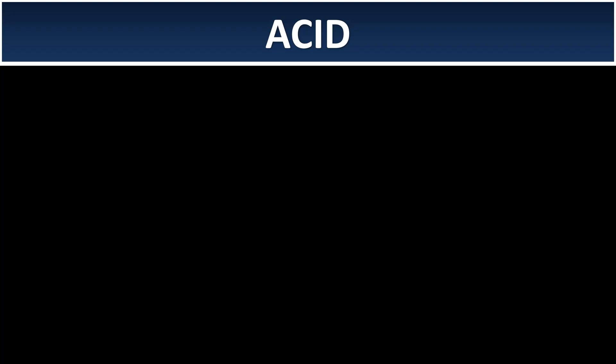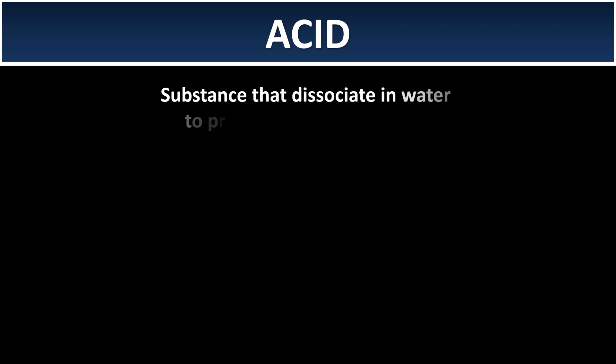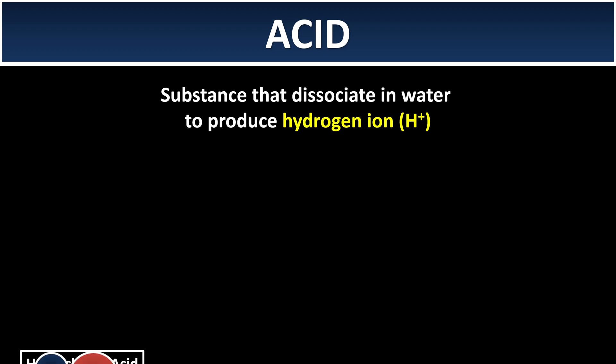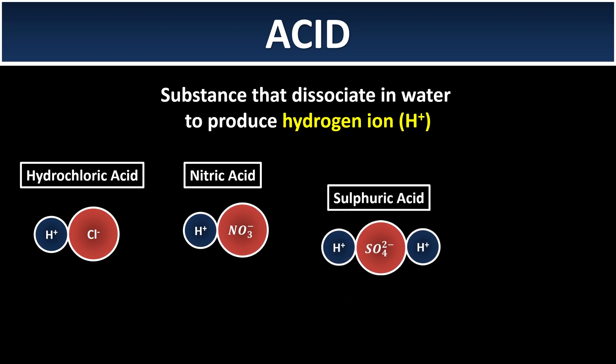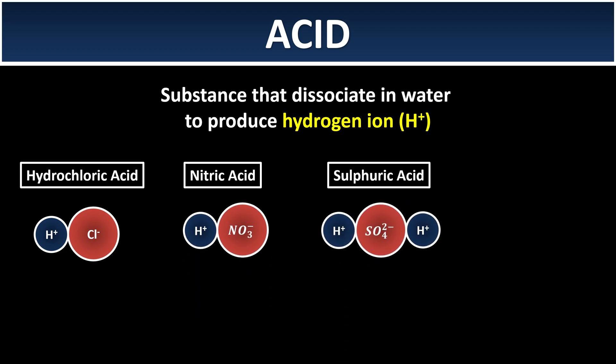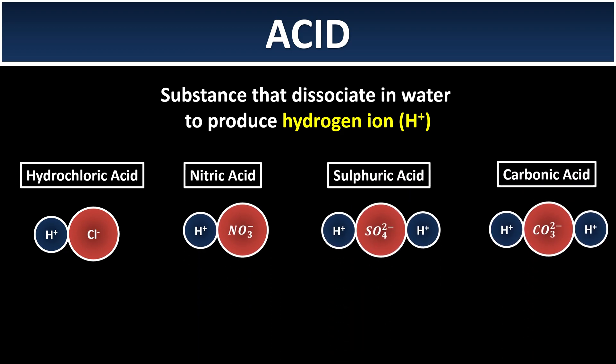Before we learn about salt, let's have a recap of what an acid is. Acid is a substance that is dissociated or ionized in water to produce hydrogen ions. Some examples are hydrochloric acid, nitric acid, sulfuric acid, and carbonic acid.